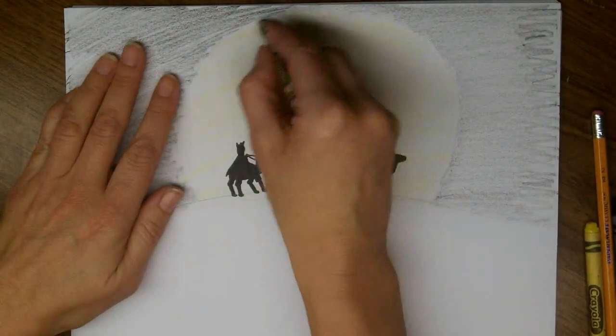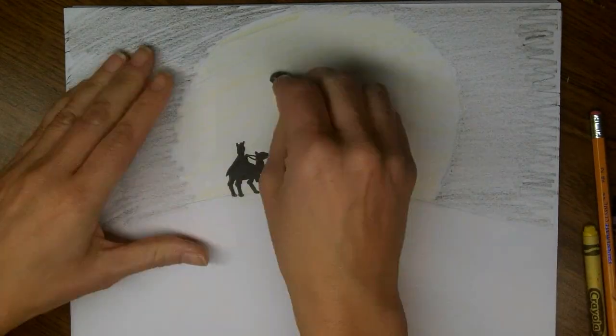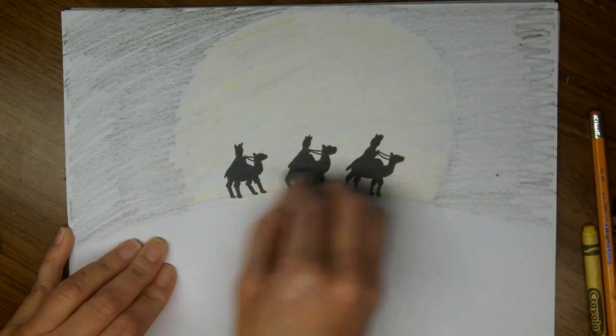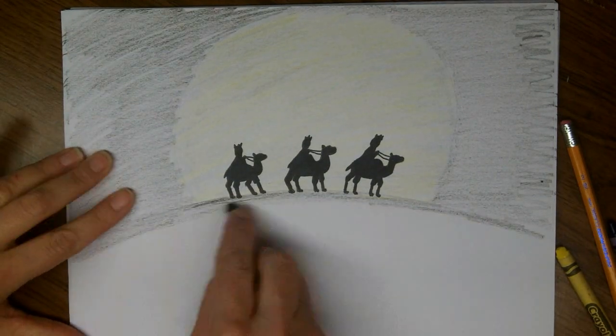And then I'm going to put some yellow on the moon, and then I'm going to cover it with gray. And I've just broken off a piece of my crayon so I could have it flatter on the edge.